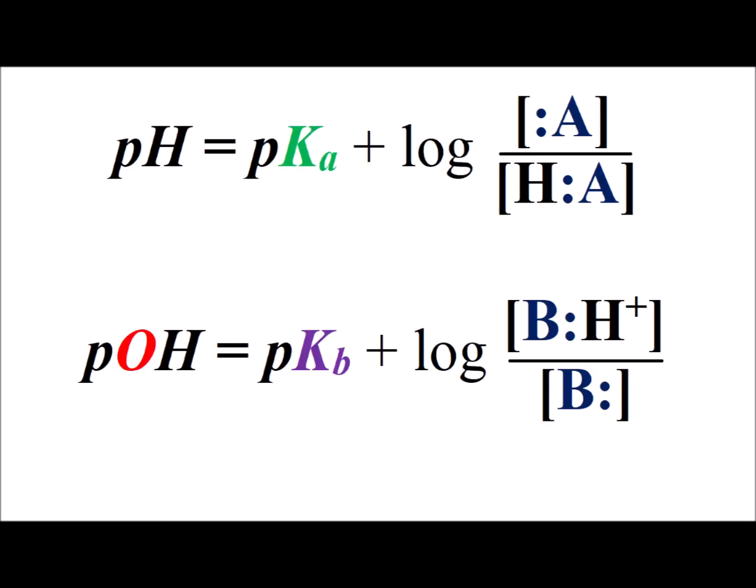We can now compare the forms for the version of the Henderson-Hasselbalch equation in terms of the weak acid, which is on top, and the version in terms of the weak base, which is on the bottom. Notice also that we have one relationship in terms of the pH and the other relationship in terms of the pOH.